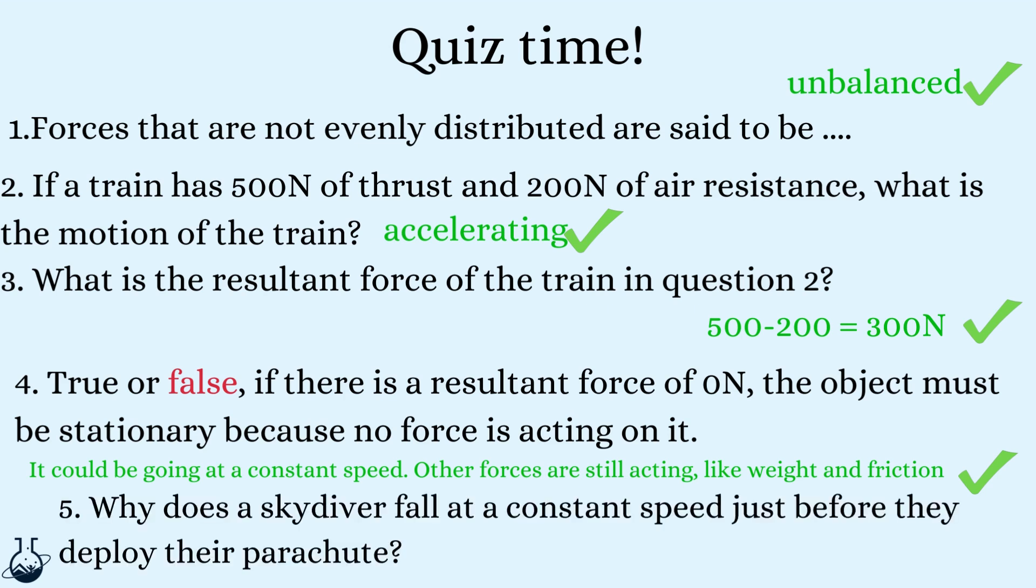And finally, question five. Why does a skydiver fall at a constant speed just before they deploy their parachute? At this point, their speed has resulted in air resistance being equal to their weight, so the forces are balanced.